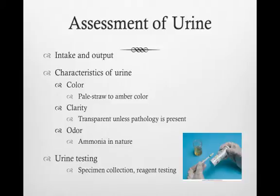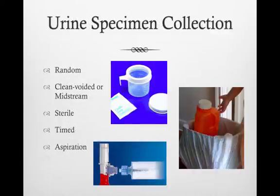Assessment of the patient's intake and output can be a good indicator of kidney function. Additional tests may be done, such as urine specimen collection or reagent testing. Urine specimen collection can be done in multiple ways: a random urine sample, a clean voided or midstream catch, a sterile sample through a straight catheter or injection port, an aspiration sample through a Foley catheter, or a 24-hour timed urine collection sample, which must be maintained over ice with preservatives, and any missed specimen is considered invalid.